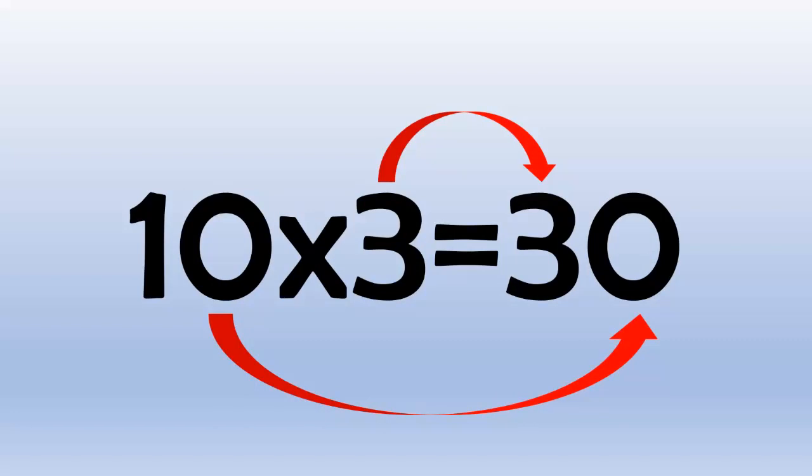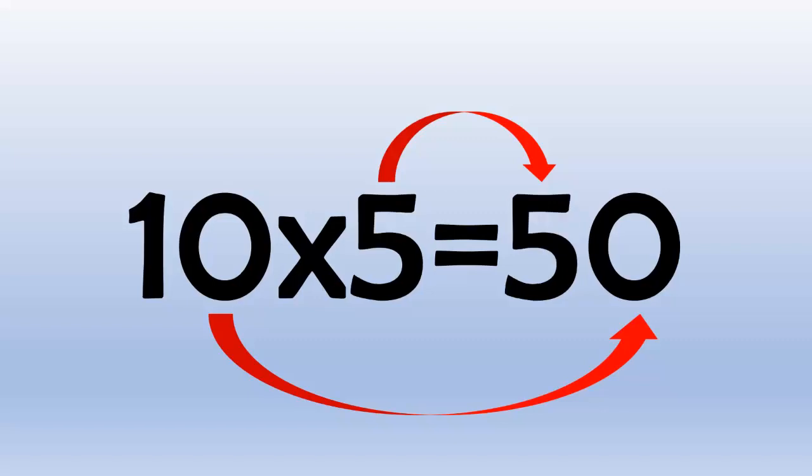10 times 4 equals 40 because 4 with a 0 on the end equals 40. 10 times 5 equals 50 because 5 with a 0 on the end is 50. 10 times 6 equals 60 because 6 with a 0 on the end is 60.